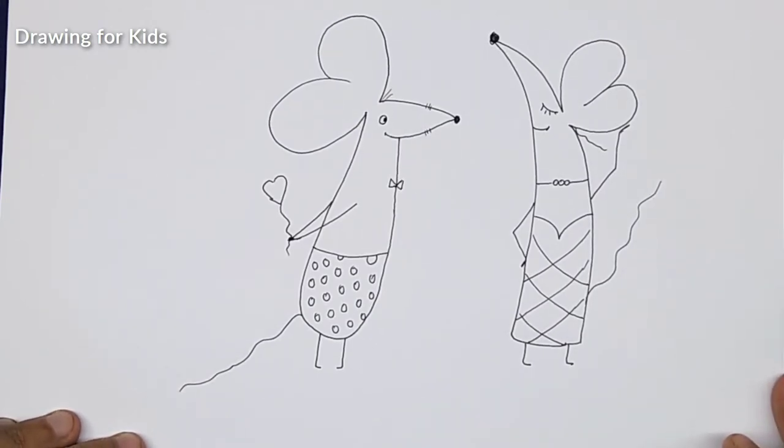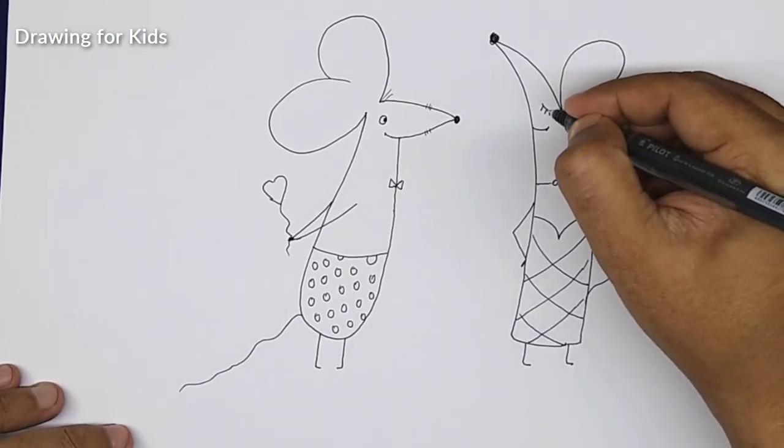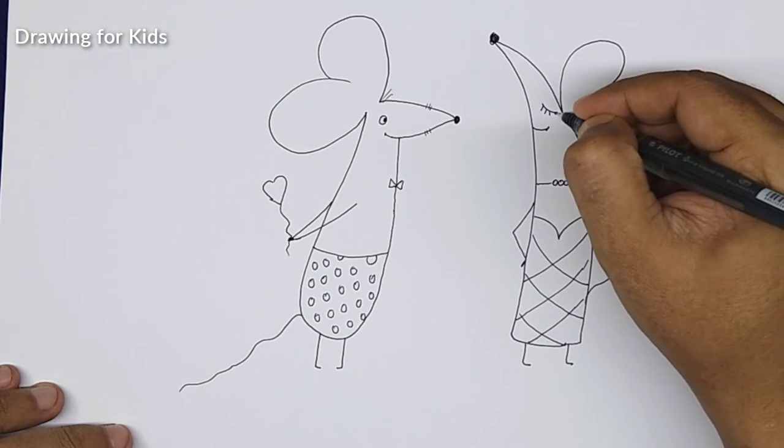So the structure for the mouse is there now. Let's color them.